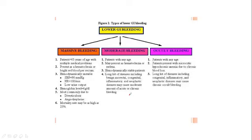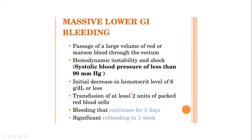Lower GI bleeding is divided into three types: massive, moderate, and occult, depending on the patient's age and presentation. Massive lower GI bleeding involves passage of large volumes of red or maroon blood per rectum with hemodynamic instability and shock. Criteria include systolic blood pressure less than 90, hemoglobin drop to 6 or less, transfusion of at least 2 units of packed red blood cells, bleeding continuing for 3 days, and significant re-bleeding within 1 week.